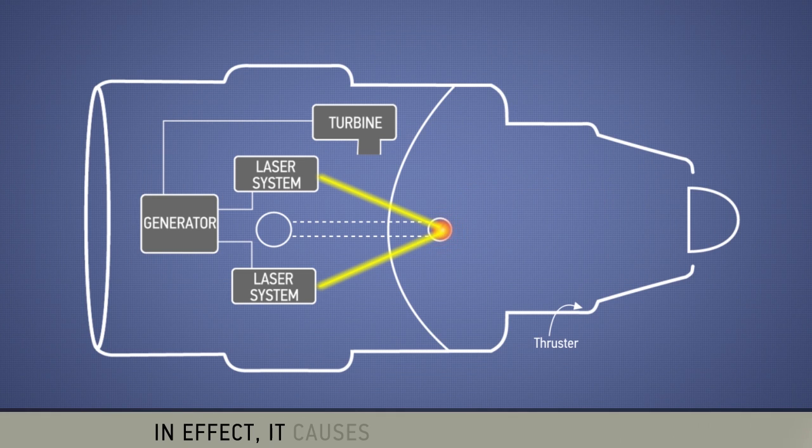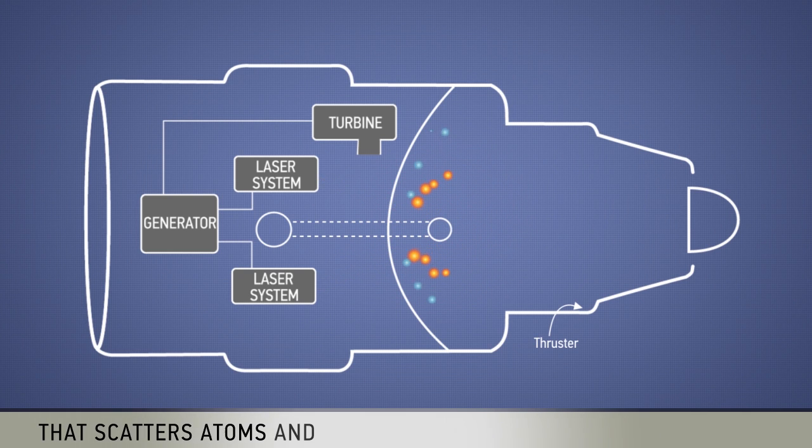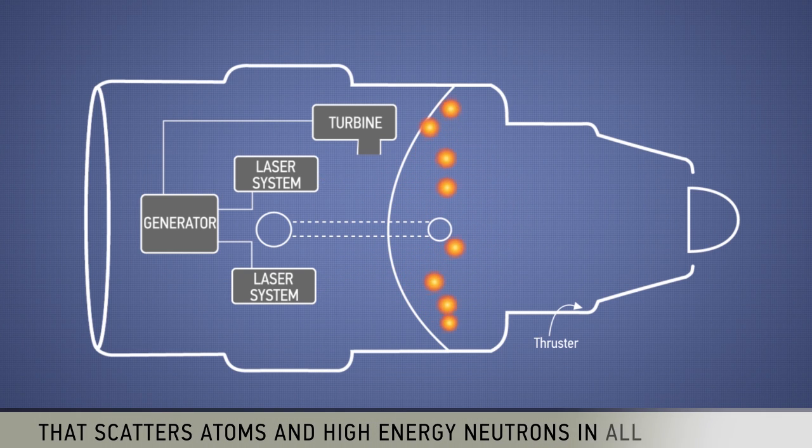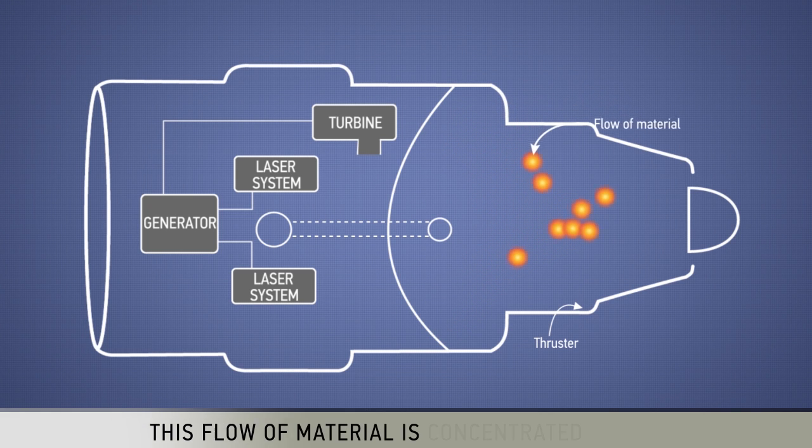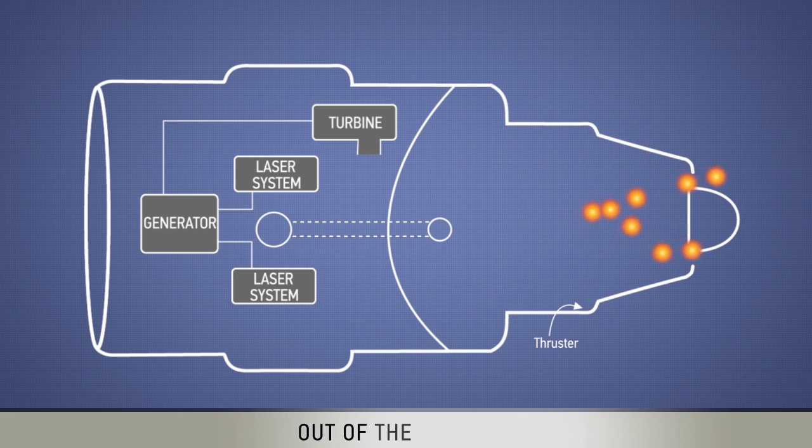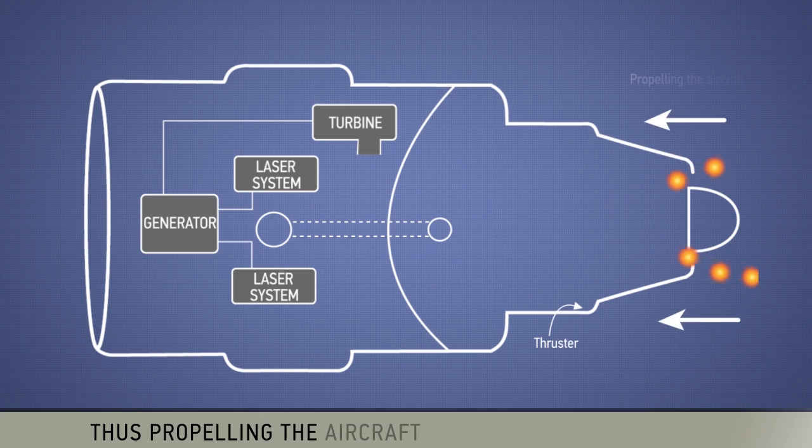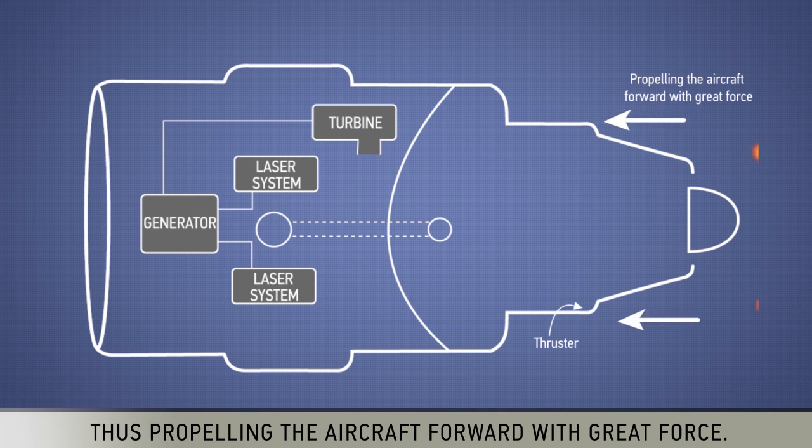In effect, it causes a tiny nuclear explosion that scatters atoms and high energy neutrons in all directions. This flow of material is concentrated to exit out of the thruster, thus propelling the aircraft forward with great force.